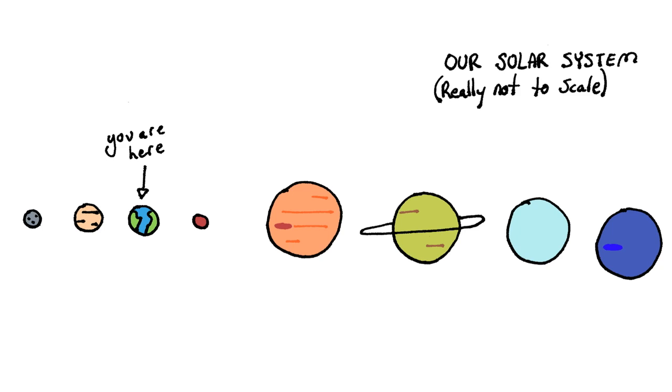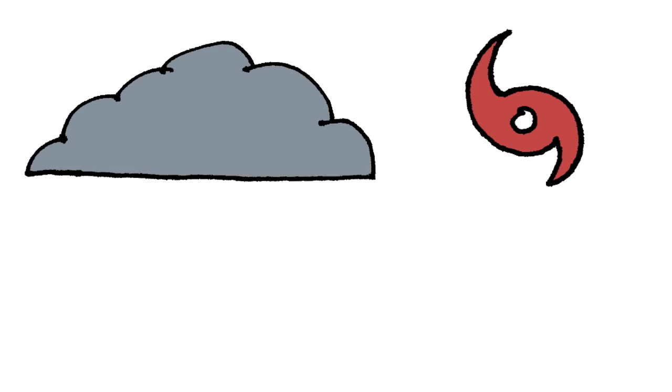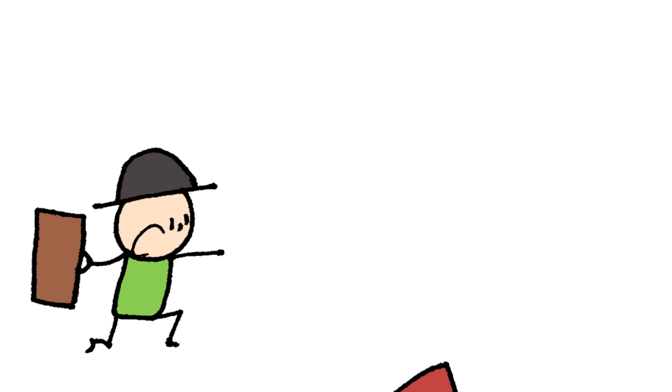There are 7 other planets in our solar system, sorry Pluto fans, most of which have a variety of weather on them as well. But let's say you get tired of all these storms and hurricanes here on Earth and you decide to pack up and leave. What does weather look like on other planets?